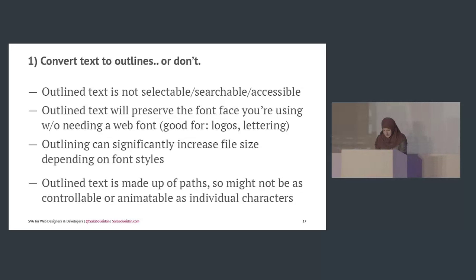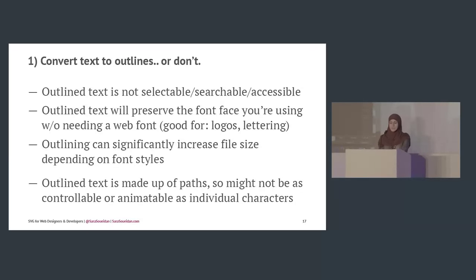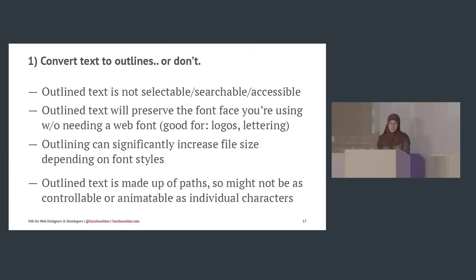I have a live example. With outlined text, you get a really large amount of paths representing just two words. Whereas if you keep the text as SVG text, you get one line of text — the code is much more readable and much better in general.